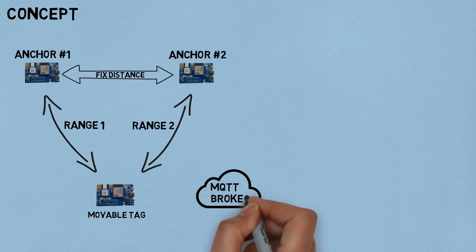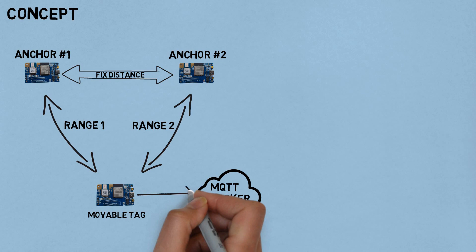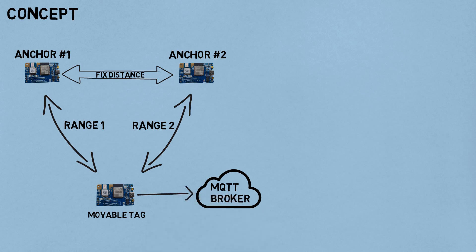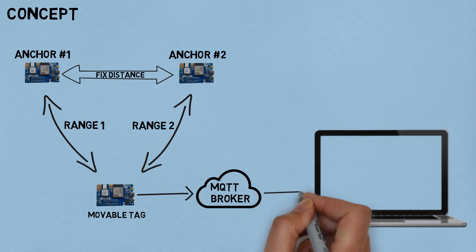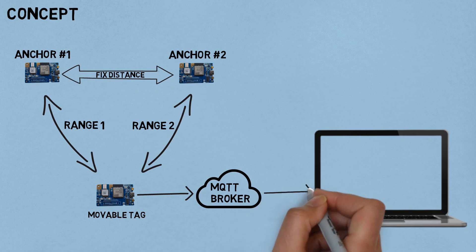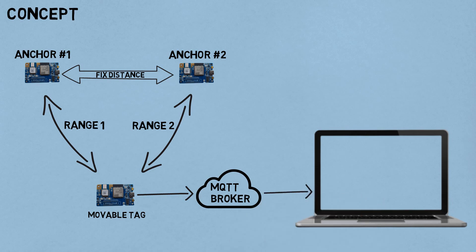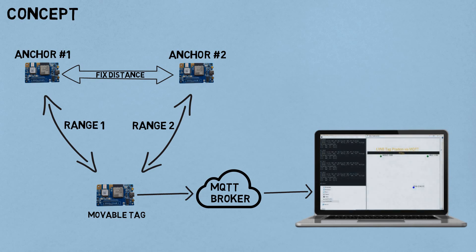The values of range one and range two will be sent to an MQTT broker in JSON format periodically. The Python program on the computer will receive the MQTT message from the broker, calculate the tag's coordinates based on the values of range one and range two, and visualize them in a window.